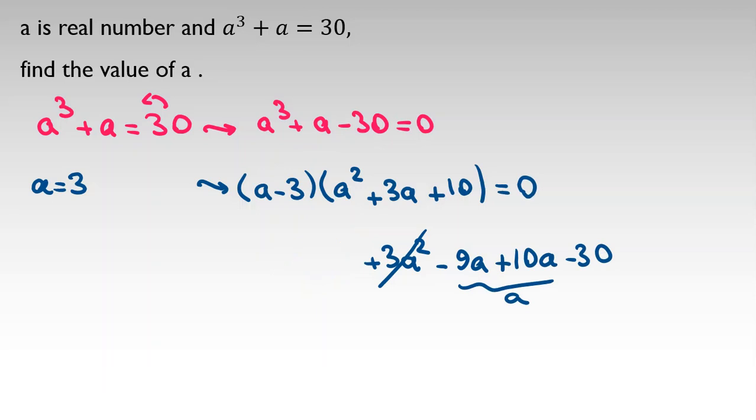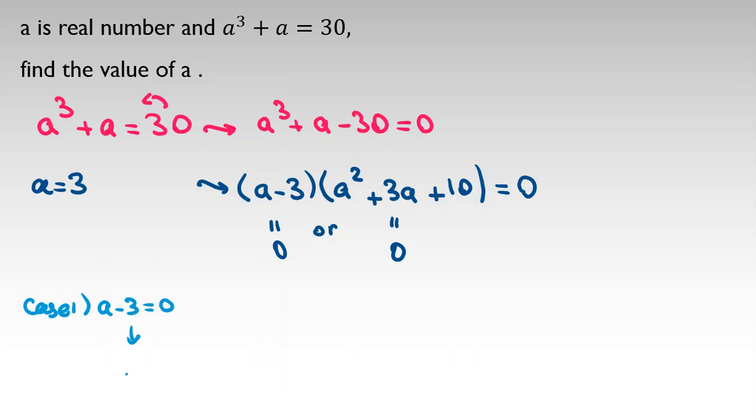So the product of two terms equals zero, meaning the first term is zero or the second term is zero. Let's consider both cases. In case one, a minus 3 equals zero, so we conclude a equals 3.